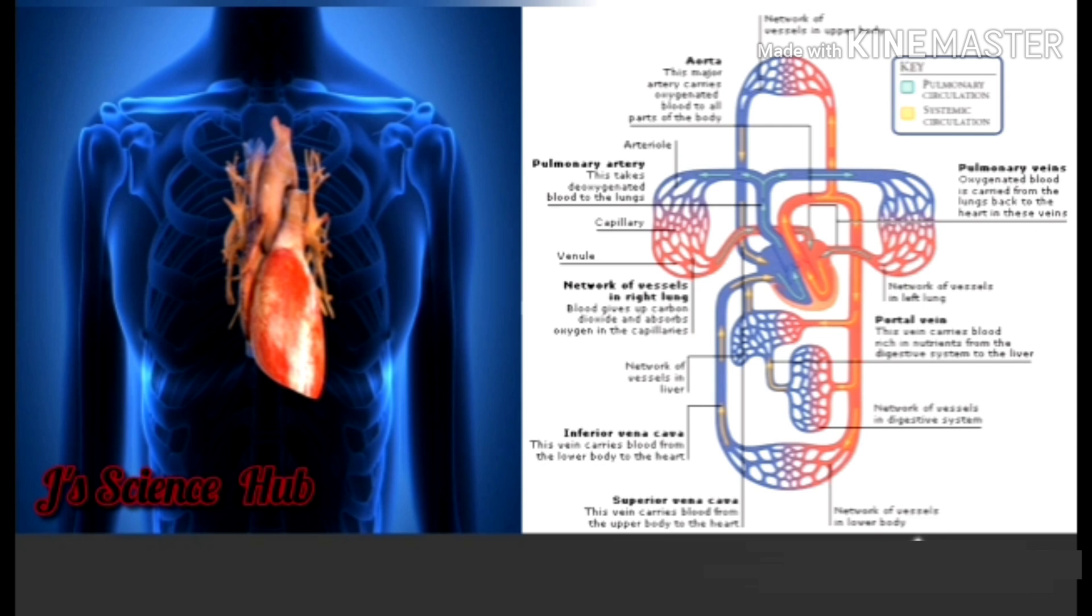Lungs are a purifier. It means they're oxygenating the blood. After oxygenation takes place, the oxygenated blood has to be brought back to the heart. The pulmonary vein which returns from the lungs brings back the oxygenated blood to the left atrium of the heart.